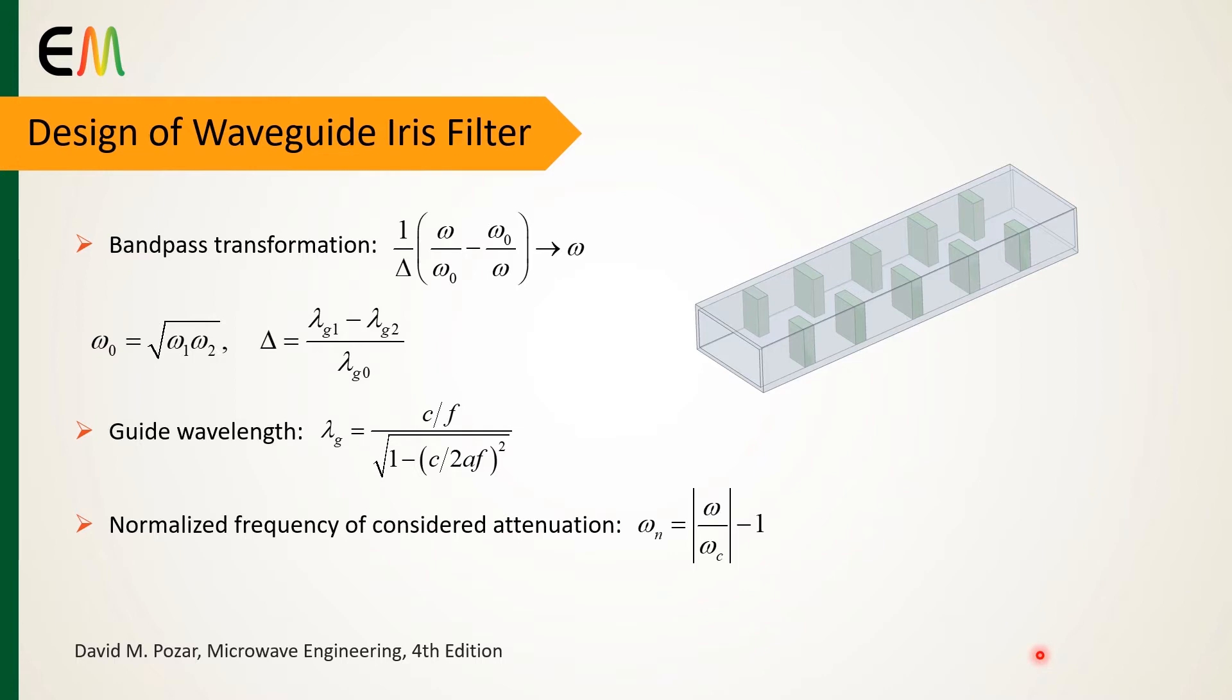Next step is to perform bandpass transformation using this relation, where ω₀ is the center frequency, ω₁ and ω₂ are the edge frequencies of passband, and Δ is the fractional bandwidth.